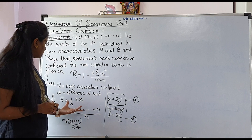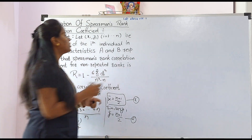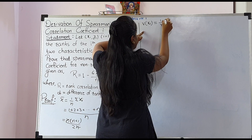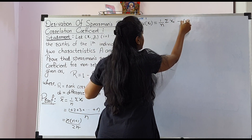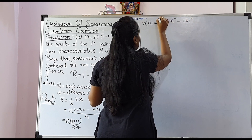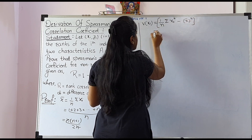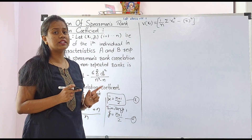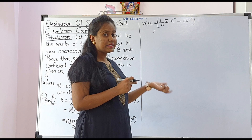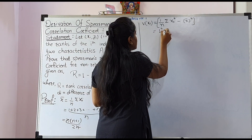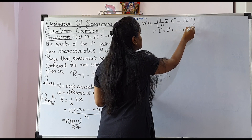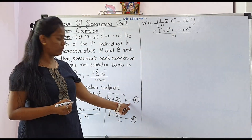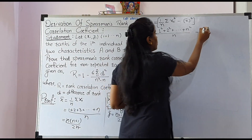Let these be equations 1 and 2. Now we will calculate the variance of xᵢ and yᵢ. The formula for variance is (1/n)·Σ(xᵢ − x̄)², which equals (1/n)·Σxᵢ² − x̄². We have to take the sum of xᵢ², where the xᵢ's are the ranks, so we take the square of all distinct ranks: (1² + 2² + … + n²)/n minus x̄². From equation 1, x̄ = (n+1)/2, so we subtract [(n+1)/2]².